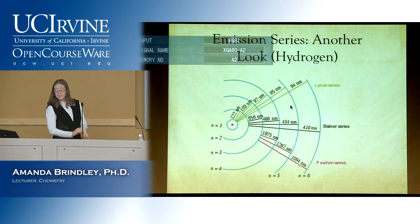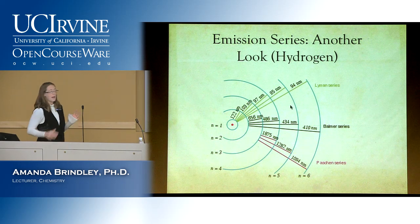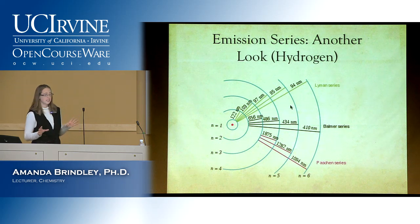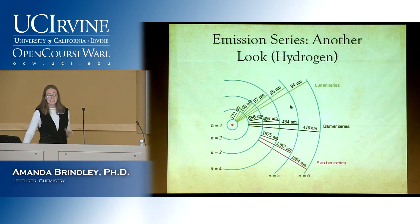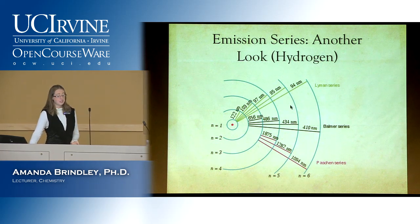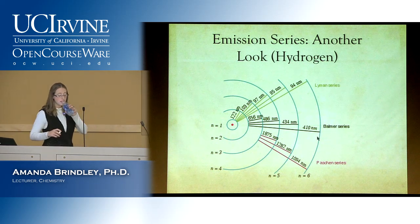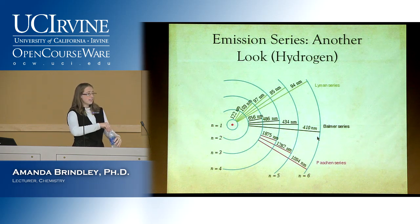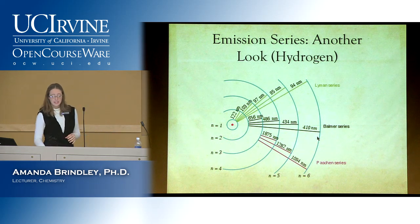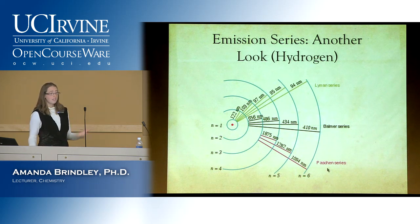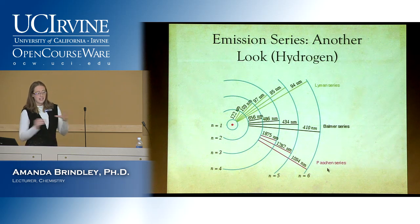Moving on: now we have all the mathematical backdrop to talk about emission spectra. Here are three different series — Lyman, Balmer, and Paschen. You don't need to memorize exactly which part of the spectrum they're in, but if I mention the Balmer series, you should know it's an emission series related to transitions, with a final energy level of n equals two.